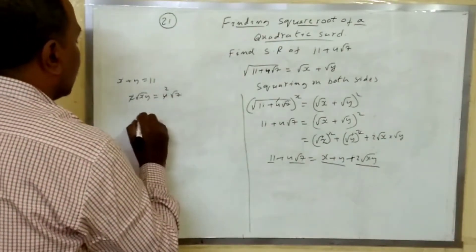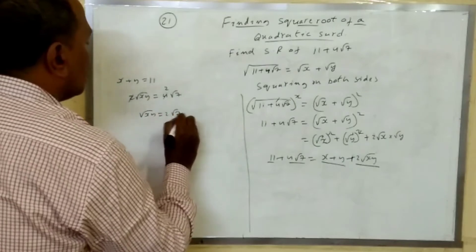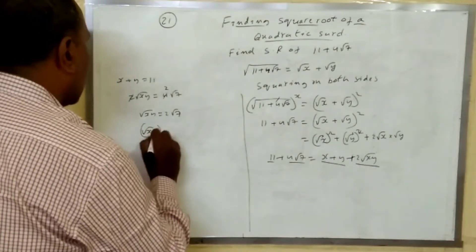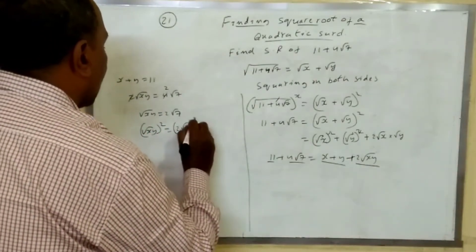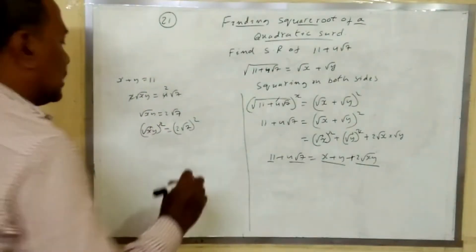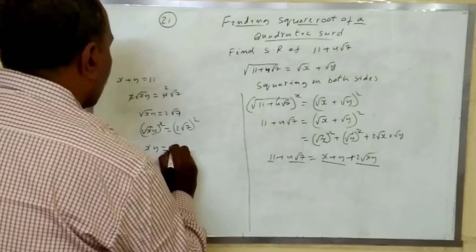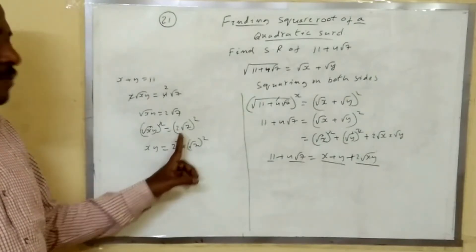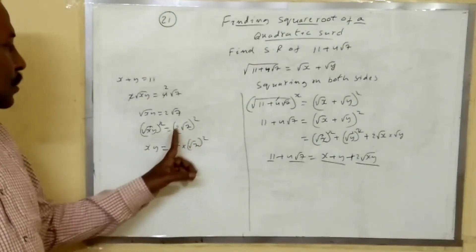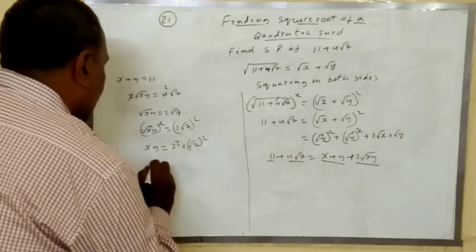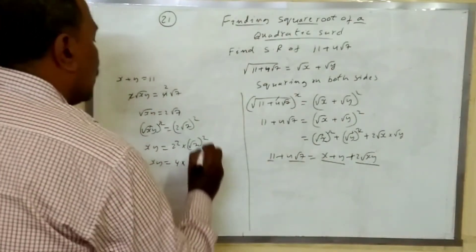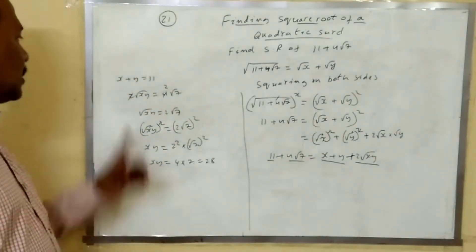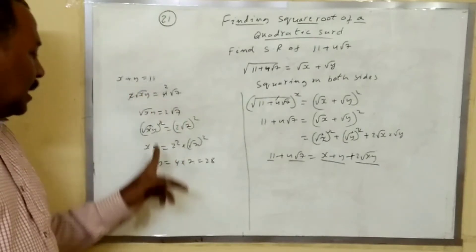Cancel the 2: root xy equals 2 root 7. Squaring both sides: xy equals 2 squared into root 7 whole squared. Using the identity (ab)^n = a^n · b^n, 2 squared is 4 and root 7 whole squared is 7, so xy equals 28. We now have x plus y equals 11 and xy equals 28.